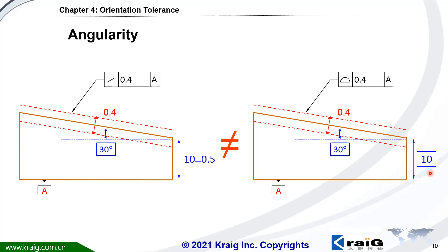This nominal position is going to control the nominal position of the top surface. Because this tolerance zone is going to be fixed at a nominal position, plus or minus.